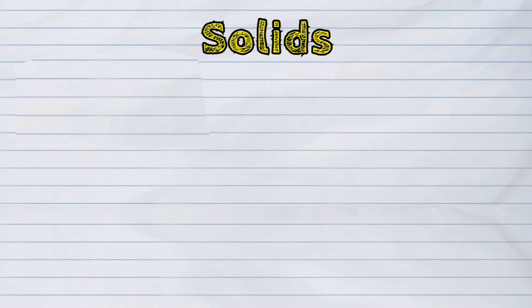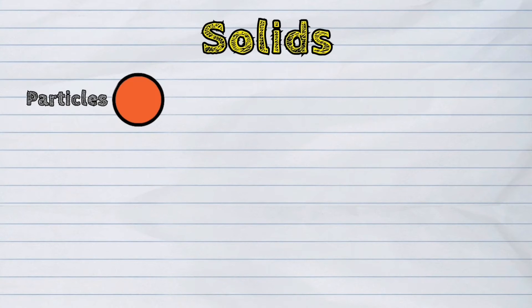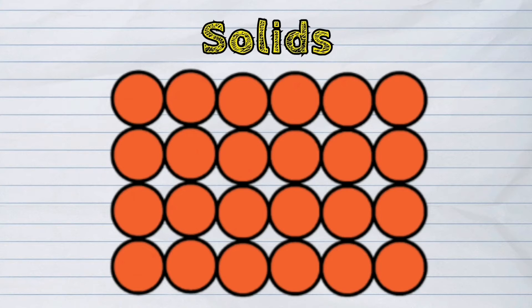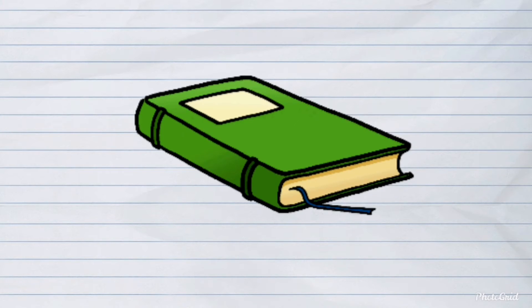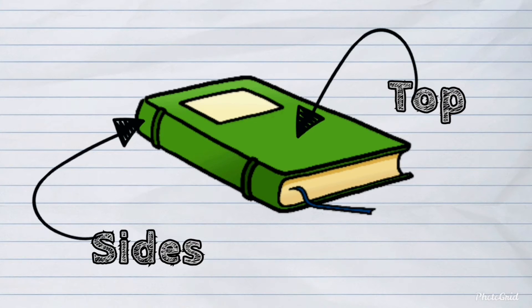Solids are made up of particles that are very closely packed together. They also have surfaces such as the top, the sides, and the bottom.